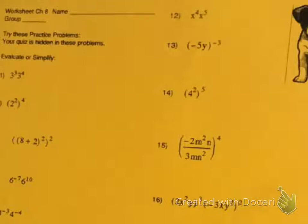Number 12, we're multiplying with same bases, so we're going to add the exponents. We're going to keep our base as x and 4 plus 5 is 9.